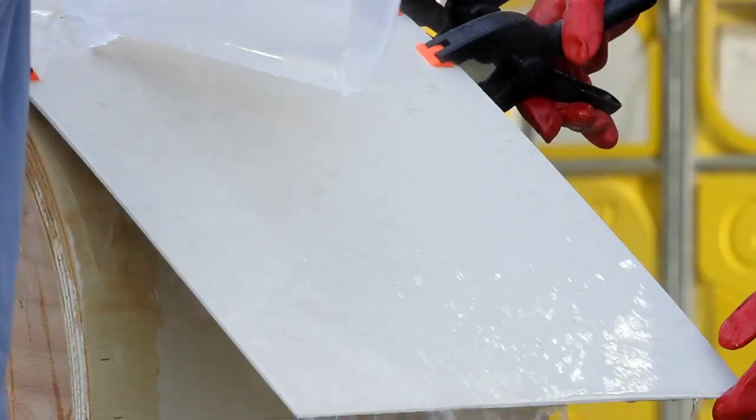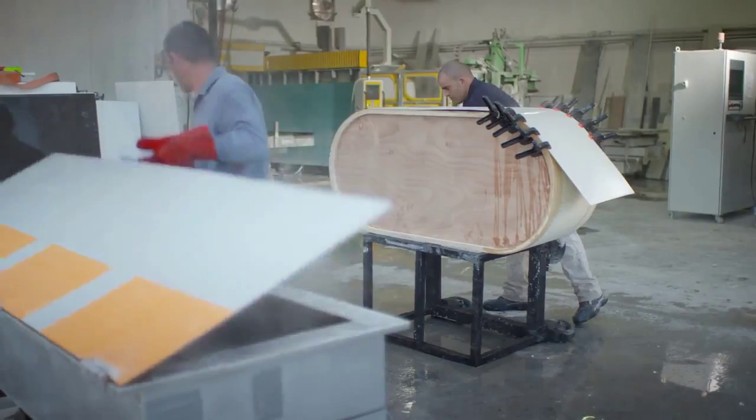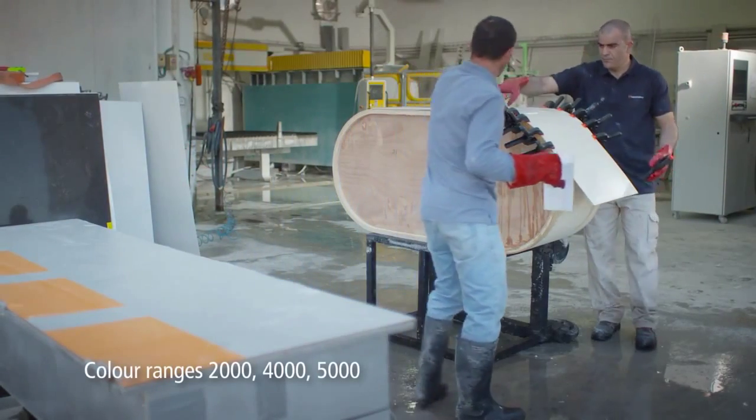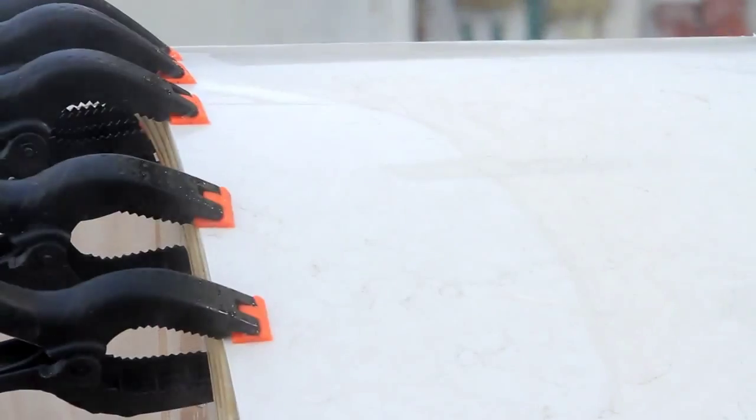Some Caesarstone colors are more suitable for thermoforming than others. These are the 2000, 4000, and 5000 ranges.